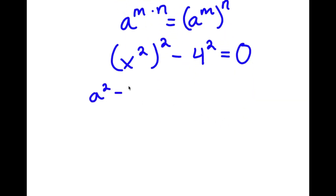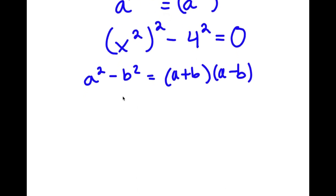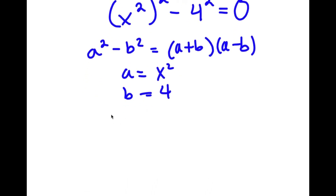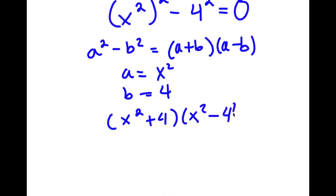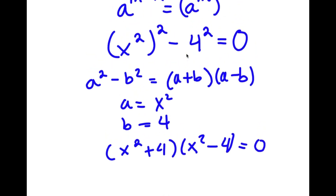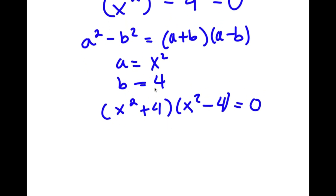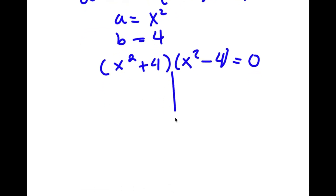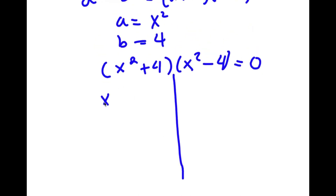Now, if I have something in the form a squared minus b squared, this equals a plus b times a minus b. So in this case, a is x squared and b is 4. So now I have x squared plus 4 times x squared minus 4 is equal to 0. This gives me two equations: x squared plus 4 equals 0, and x squared minus 4 equals 0.